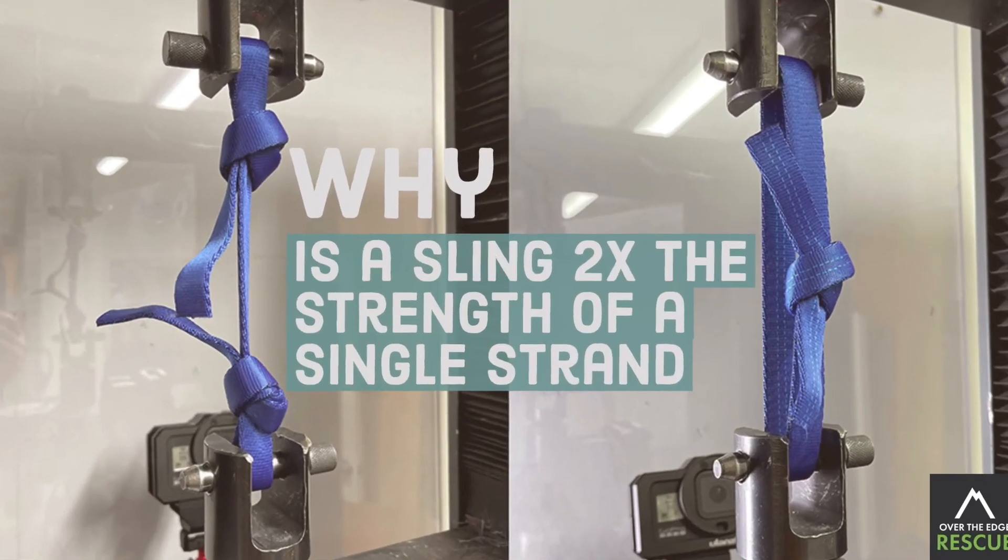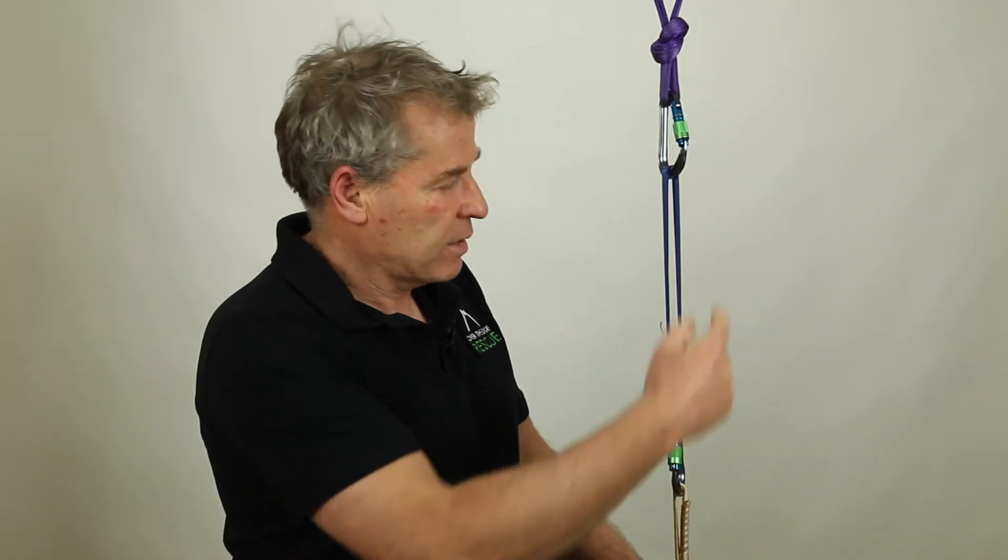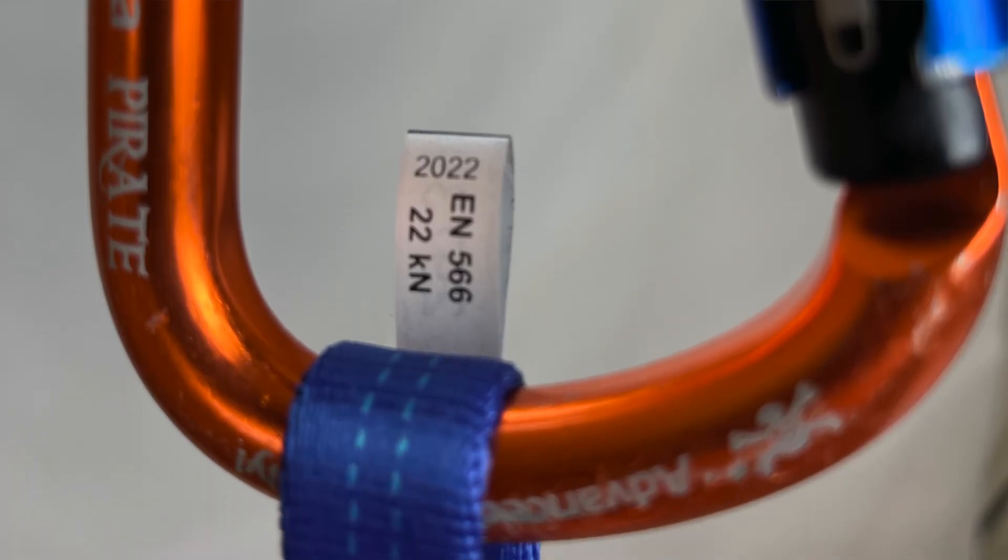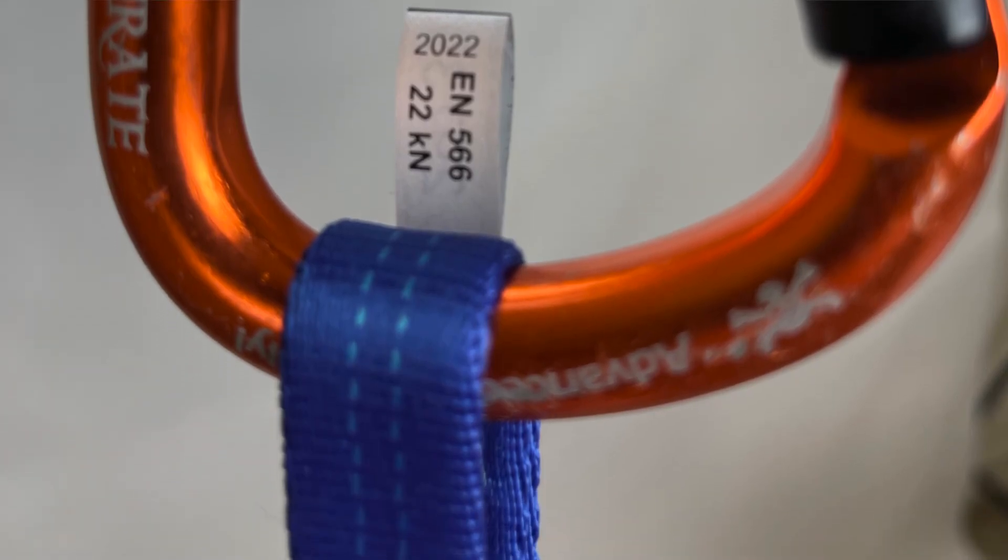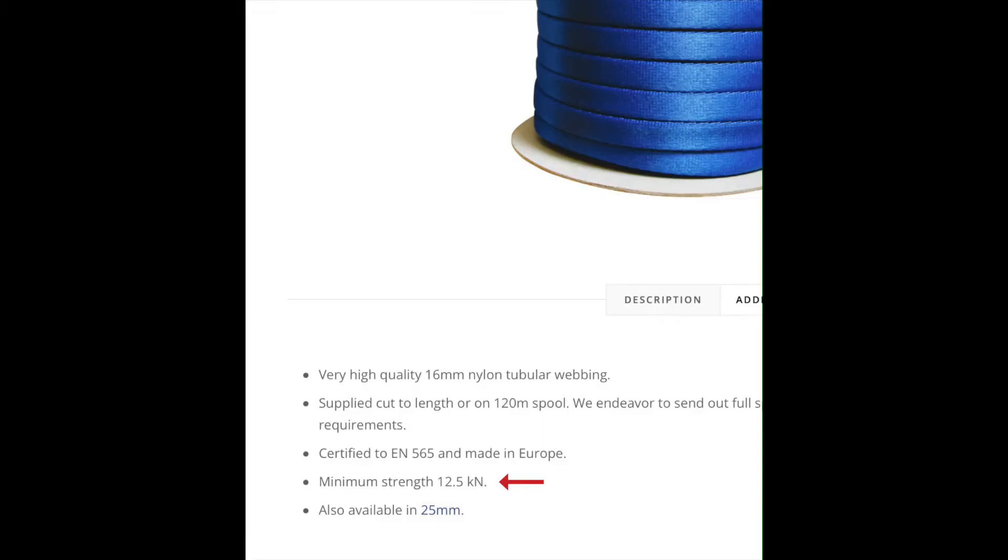We're going to look at the sling here and figure out why it's double the strength of a single strand. Let's think about this piece of webbing as a sling. The manufacturer rates it to 22 kilonewtons as written on the label here, yet if you dig into the specs of the actual sling itself, it's 12.5 kilonewtons just for a single strand. So there's something going on here. That's what we're going to look at and figure out—why is it double the strength of a single strand?